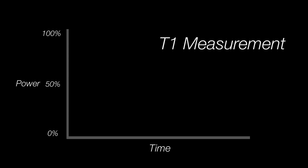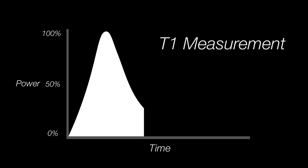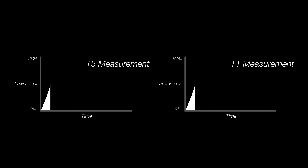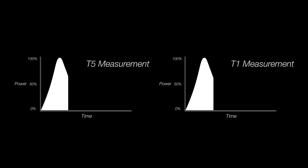T1 is a measurement of the time from the beginning of the flash up to full power and then back down until 90% of the light has been dissipated from the flash tube. T1 is a far more accurate measurement of flash duration than T5. If you don't have a light meter, you can usually find the data from the manufacturer on their website — just pay attention to which T scale they're using.